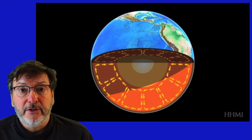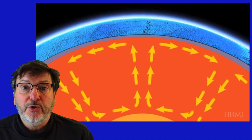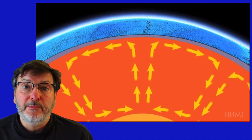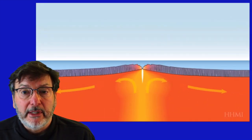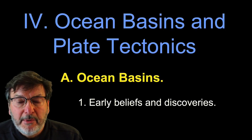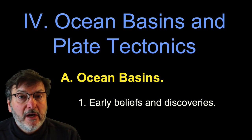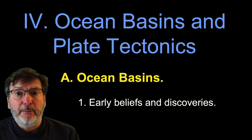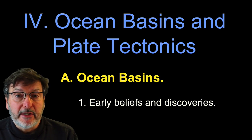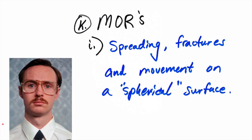Eric Hyatt here with another short lecture for Oceanography class 328-528. Today I have a short segment on the physical attributes of ocean spreading and some of the implications for plate tectonic theory. We're in the section on ocean basins and plate tectonics, focusing on the basins themselves and the early beliefs and discoveries that go into building the plate tectonic theory. Today I want to focus on mid-ocean ridges — this is section K in our series of notes.